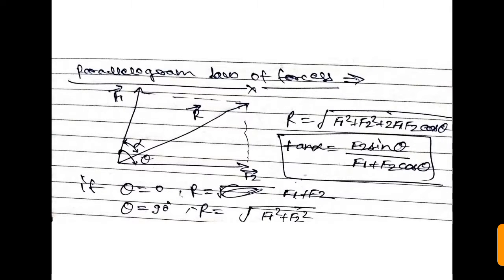There are some laws for calculating the resultant vector of forces. The first one is the parallelogram law of forces. As we can see, there are two force components F1 and F2. To calculate the resultant R, we use the formula: R = √(F1² + F2² + 2·F1·F2·cosθ).